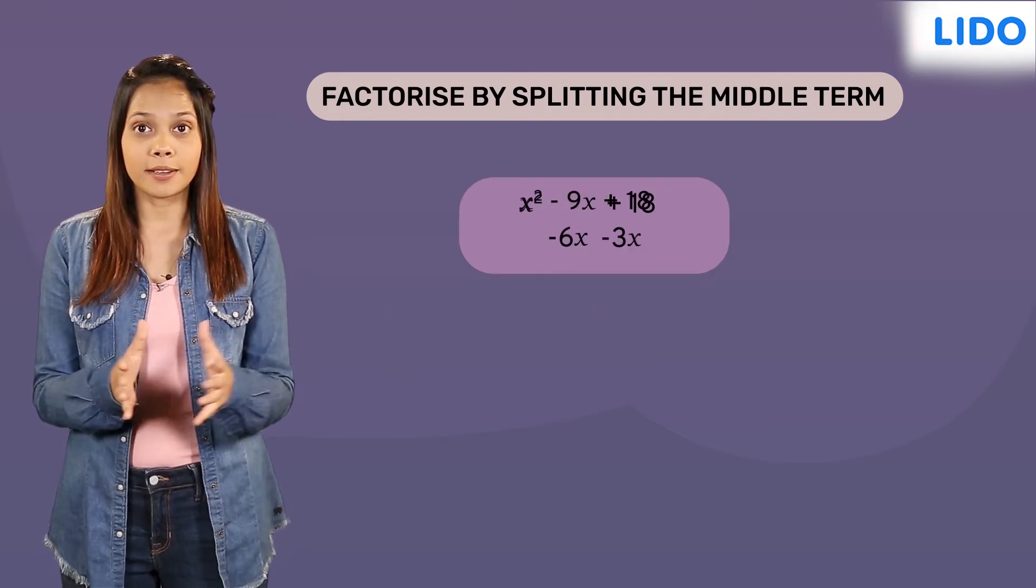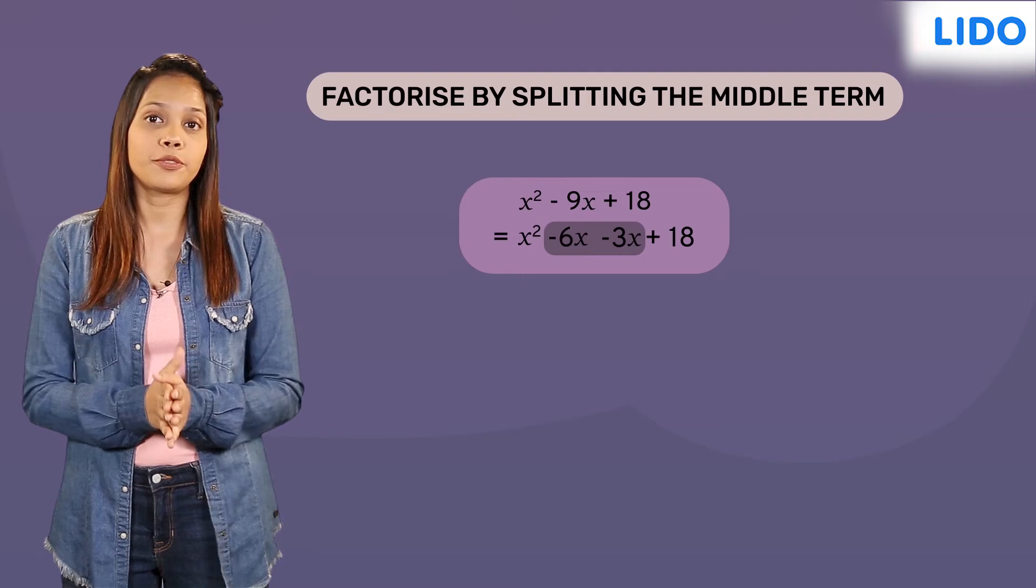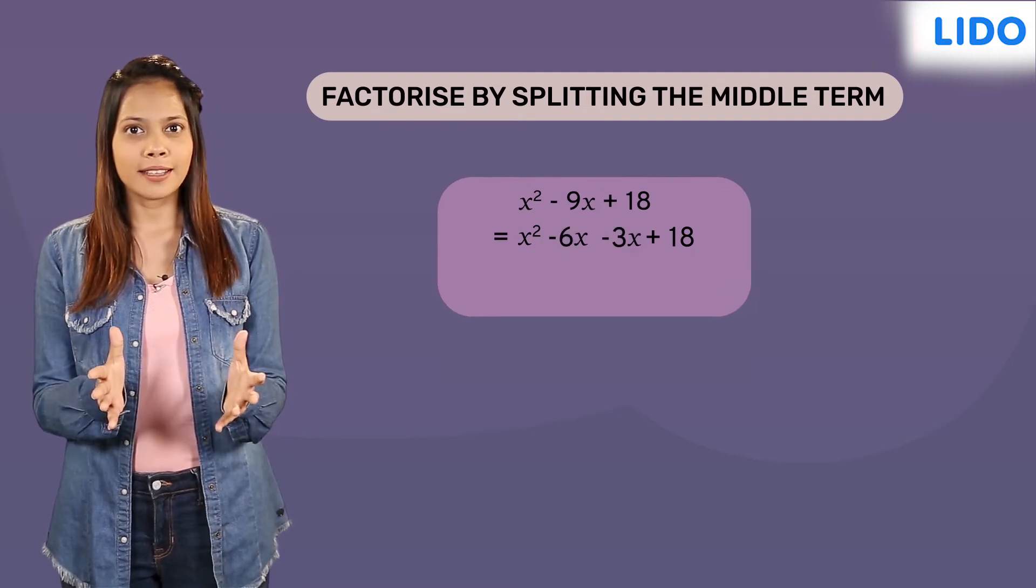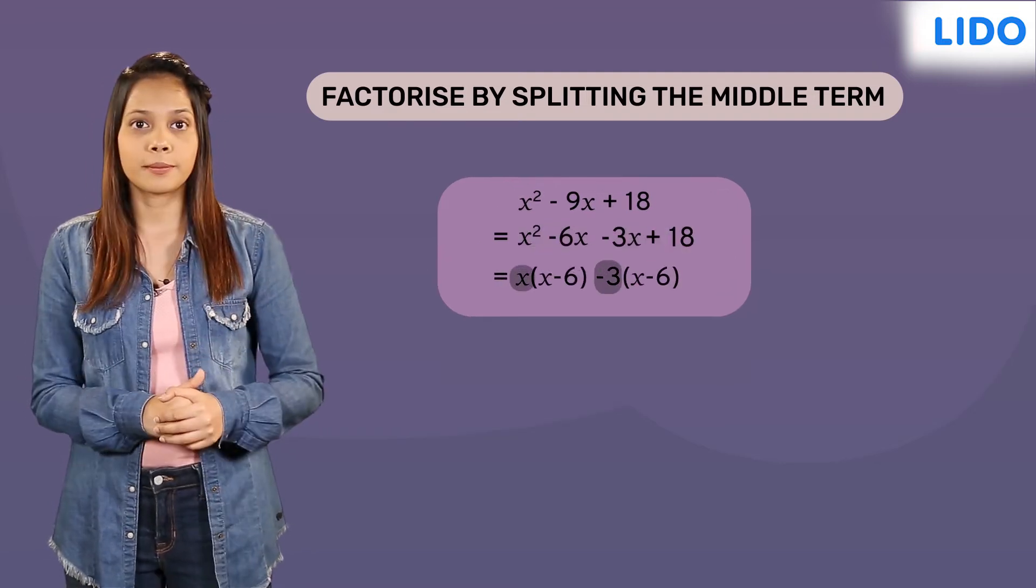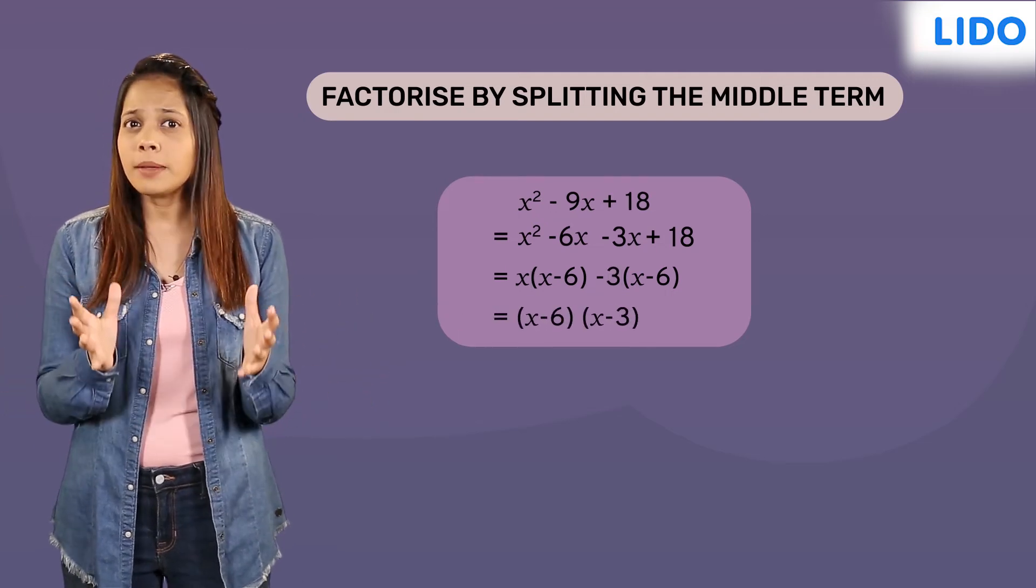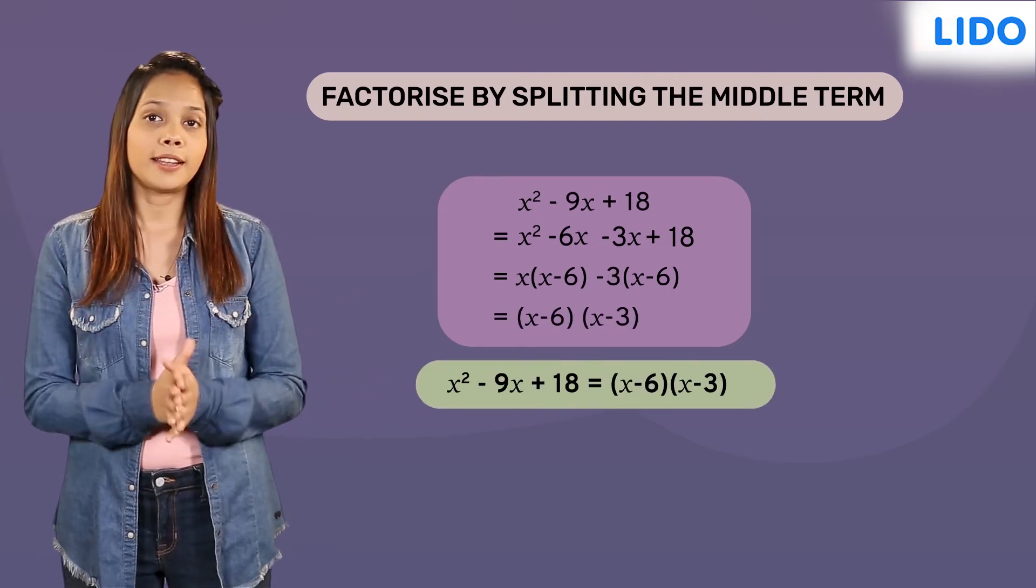Express the middle term as the sum of negative 6x and negative 3x. Next, start grouping the terms and don't forget to take out the common terms. And finally, take out the common binomial and write the final answer.